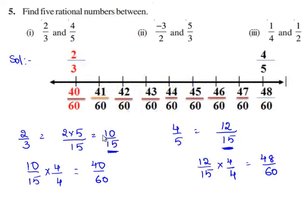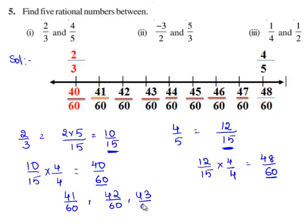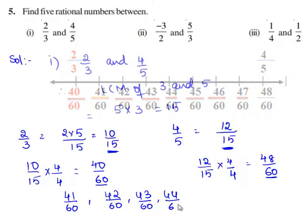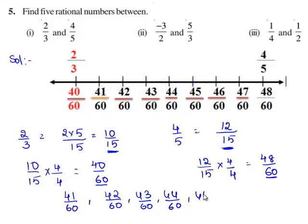So, now we shall write 5 rational numbers between 40 by 60 and 48 by 60. Therefore, the 5 rational numbers are: 41 by 60, 42 by 60, 43 by 60, 44 by 60, and 45 by 60. Hence, in the same procedure, we can find any number of rational numbers between two rational numbers by converting them into their equivalent rational numbers.